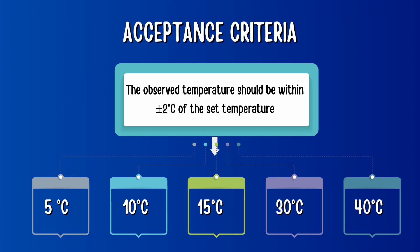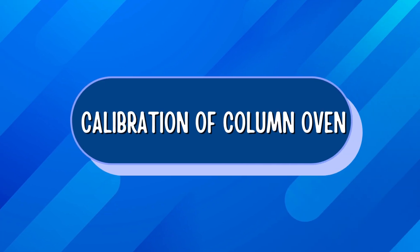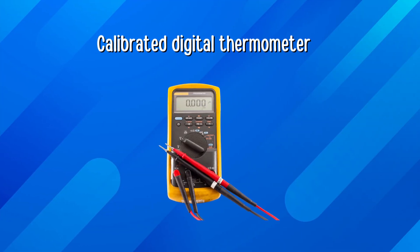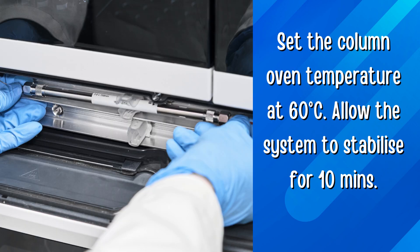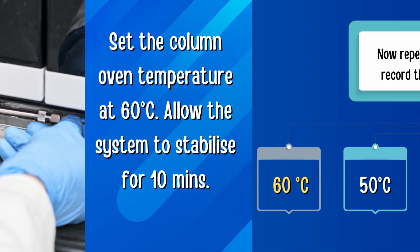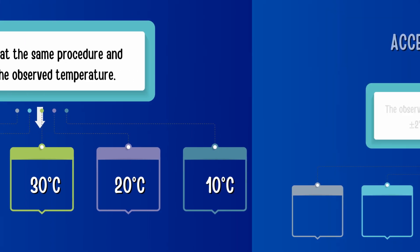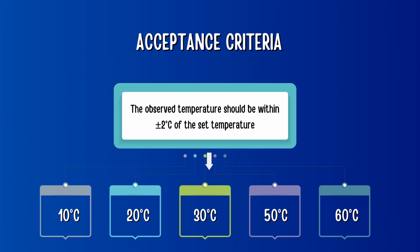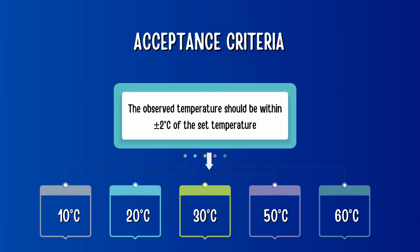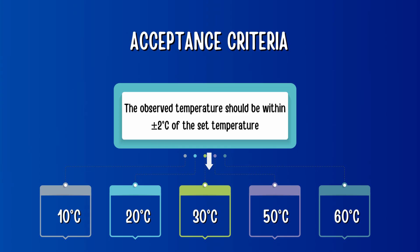Now we will discuss calibration of the column oven. To perform calibration of the column oven, we again require a calibrated digital thermometer. Set the column oven temperature at 60°C and allow the system to stabilize for 10 minutes. After about 10 minutes, record the temperature using a calibrated probe with a digital thermometer, and repeat the same procedure at 50°C, 30°C, 20°C, and 10°C and record the observed temperature. The acceptance criteria is the observed temperature should be within ±2°C of the set temperature.